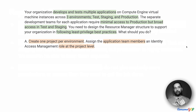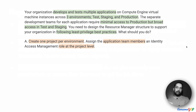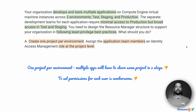Option A says: create one project per environment. Assign the application team members an Identity Access Manager role at the project level. So essentially there are three projects — a test project, a staging project, and a production project. When there is one project per environment, we are saying that multiple teams or multiple apps will have to share the same project at some stage. This is not something we want. There could be artifacts left behind, and Team A and Team B simultaneously wanting to test could mess up each other's projects or applications. Therefore, having one project per environment is not acceptable.